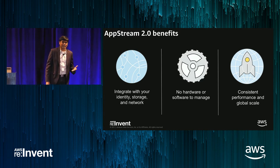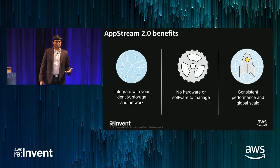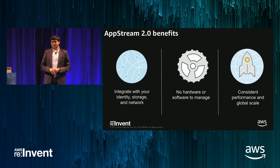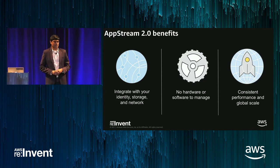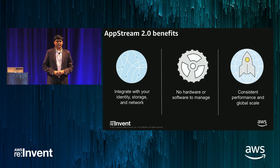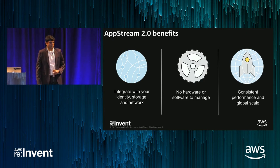It's a service that provides consistent performance and global scale. Each user gets an application experience that has been fixed by the administrator, so they get the best performance from the underlying instance type they use on AppStream. Users can connect to AppStream from wherever they are in the world and connect to the closest region where AppStream is available. A company setting up AppStream in one region can easily expand that to other regions and get the same experience for their users.